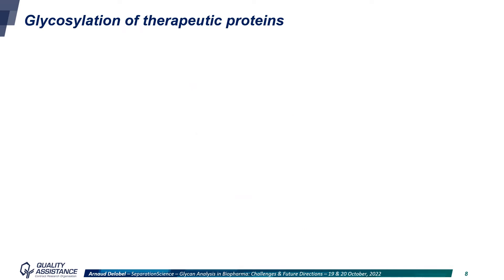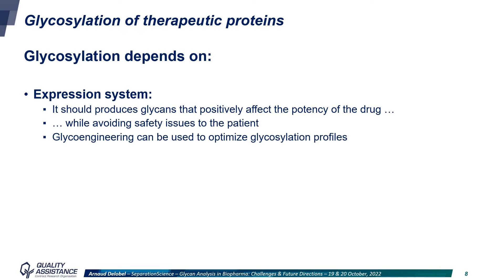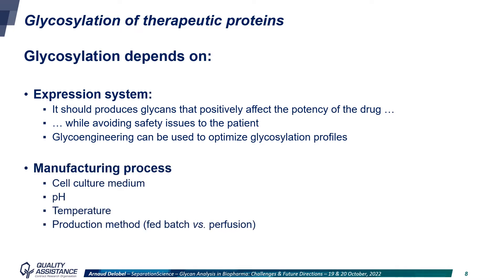The glycosylation of therapeutic proteins depends on different factors. First, the expression system should be chosen such that it produces glycans that positively affect the potency of the drug while avoiding safety issues to the patient. If needed, glycoengineering can be used to optimize the glycosylation profile and thus the physico-chemical and biological properties of the drug. The second main factor is the manufacturing process: the cell culture medium, the pH, the temperature, and also the production method — fed batch or perfusion — all have a critical impact on the glycosylation of the final drug.